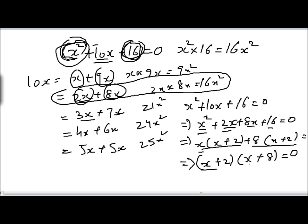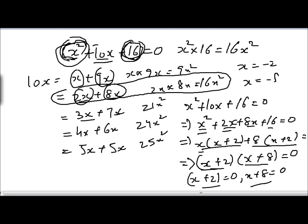Now we put both x plus 2 and x plus 8 equal to zero. From x plus 2 equals 0 we get x equals minus 2, and from x plus 8 equals 0 we get x equals minus 8. And this is the solution of the given quadratic equation.